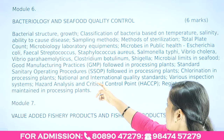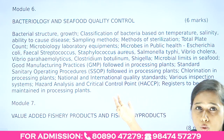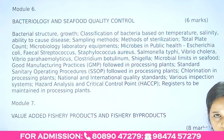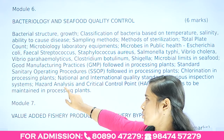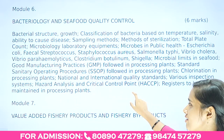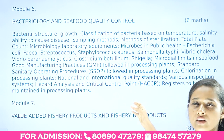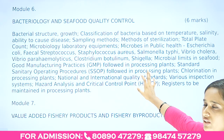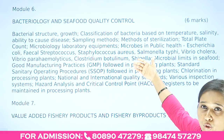Module 6 also includes standard sanitary operating procedures (SSOP) followed in processing plants, chlorination processes, national and international quality standards, inspection systems, quality assurance measurements, HACCP — Hazard Analysis and Critical Control Points — for seafood processing, and various registers maintained in processing plants. All related to seafood quality, bacteriology, and the microbial portion.